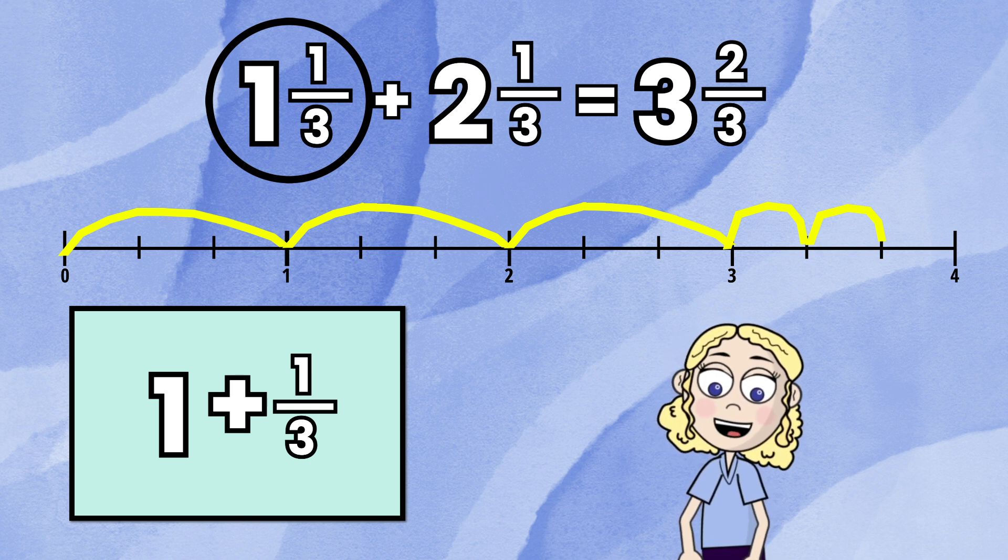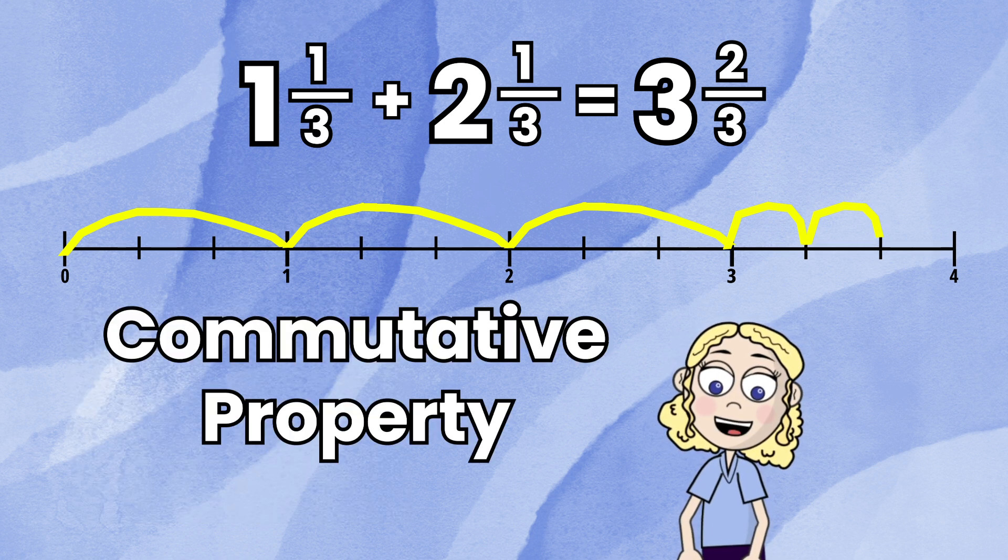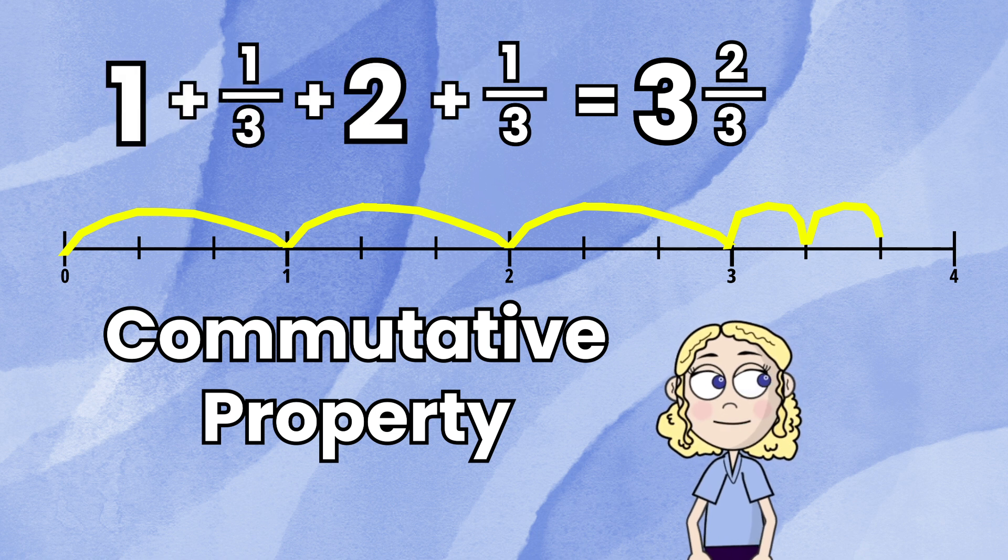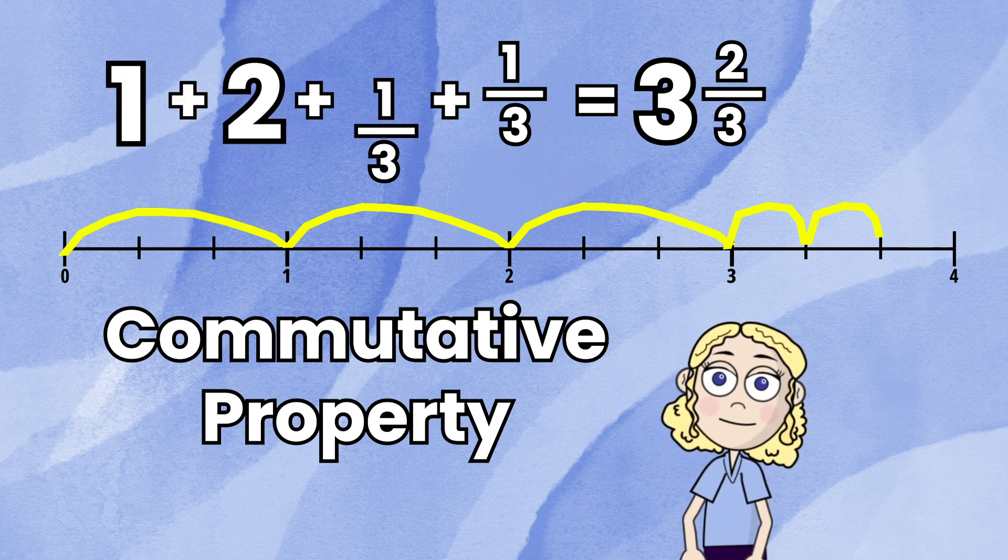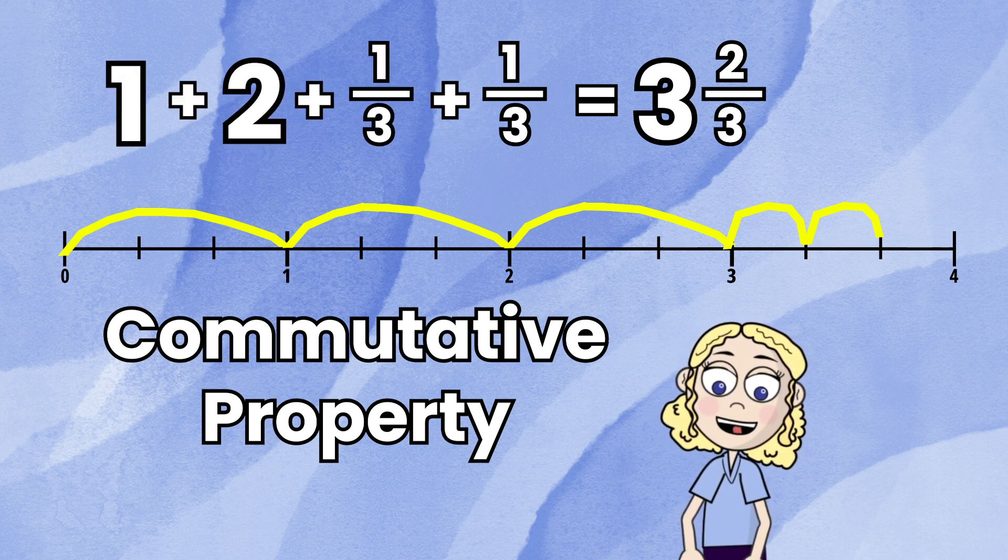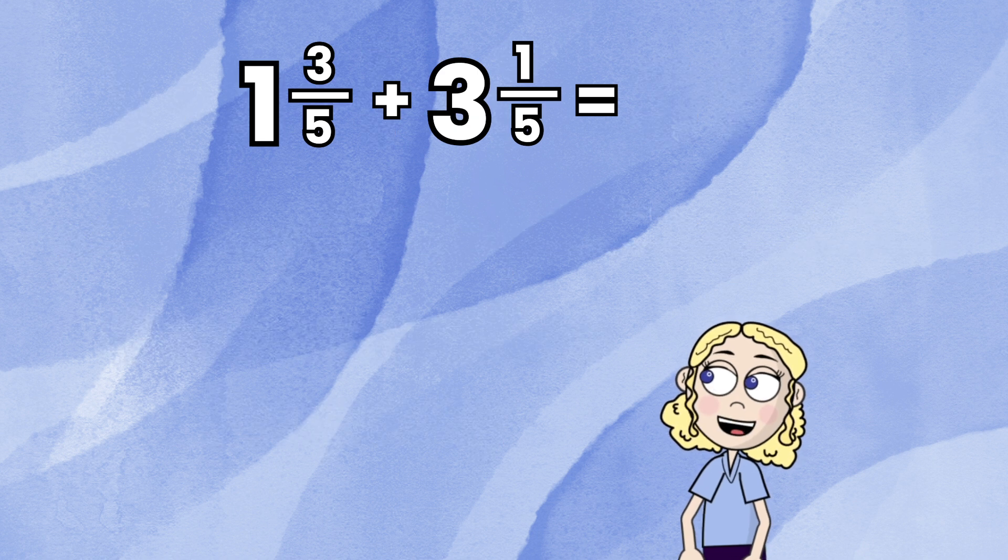This is important to remember because when we add, we will apply the commutative property, which means we can add numbers in any order and get the same sum. So let's look at this problem here: 1 and 3 fifths plus 3 and 1 fifth.